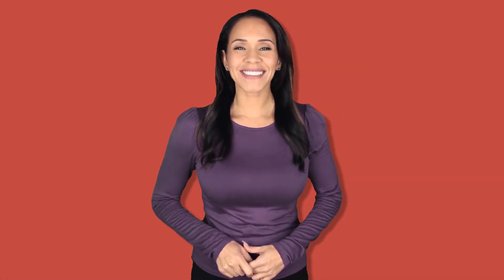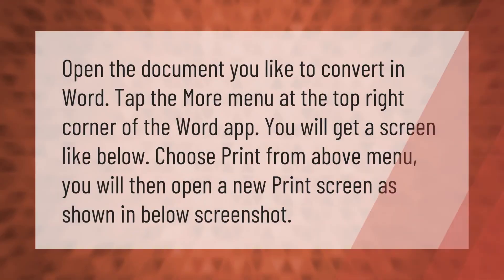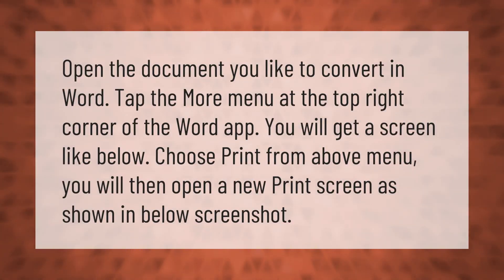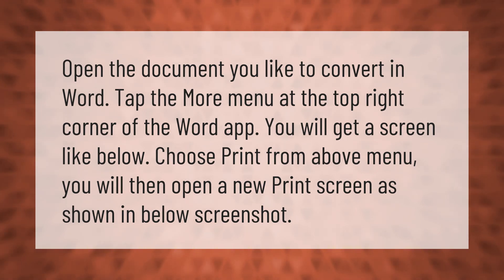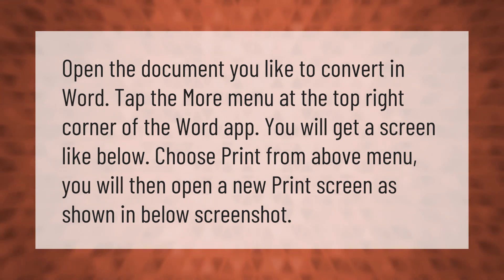To convert a document to PDF in Word, open the document you'd like to convert. Tap the More menu at the top right corner of the Word app. Choose Print from the menu. You will then see a new print screen. Thank you for watching — please subscribe and hit the bell notification.